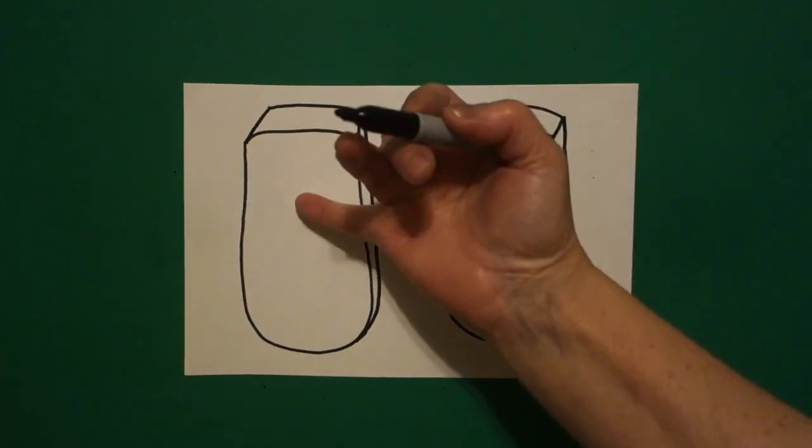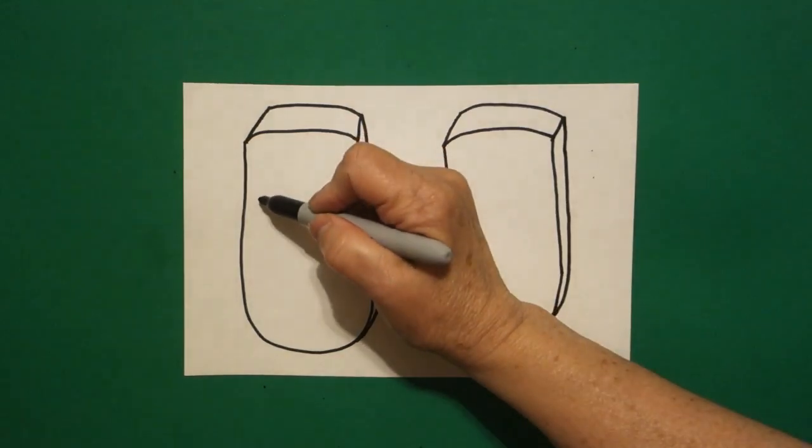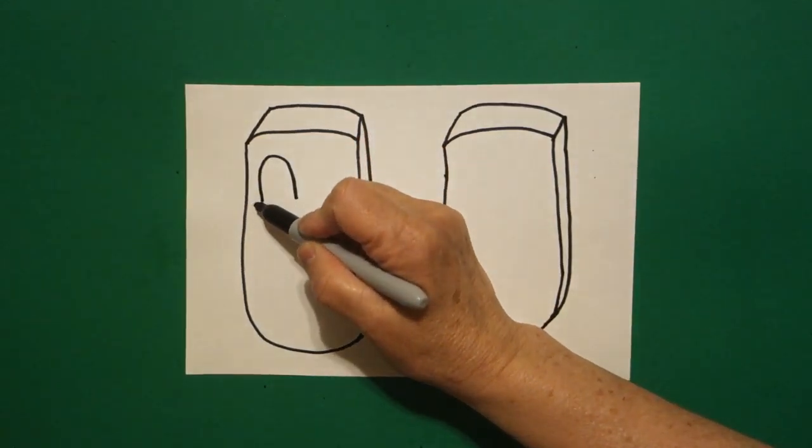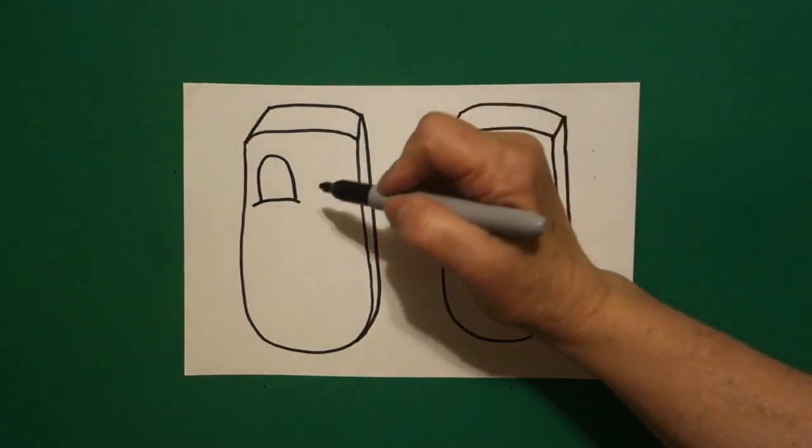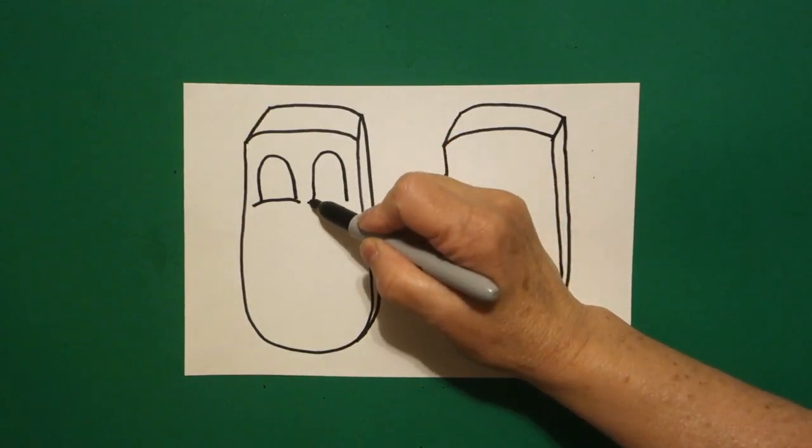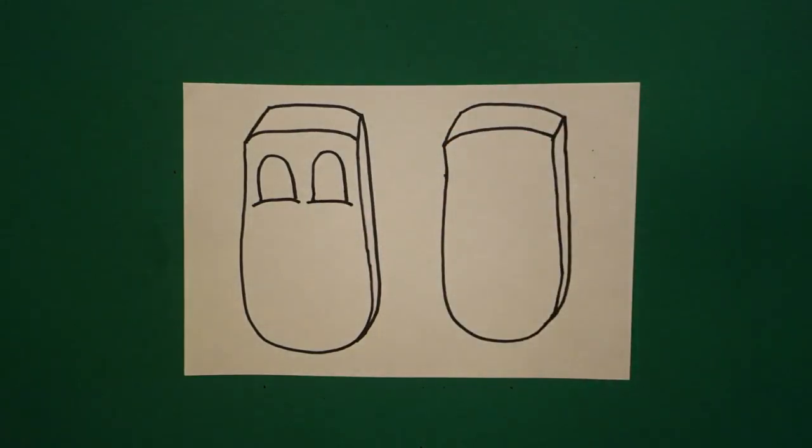I come back to the left. Right about here I'm going to draw a big curved line and then a curved line underneath. Right next to it on the right, big curved line, slightly curved line again underneath.